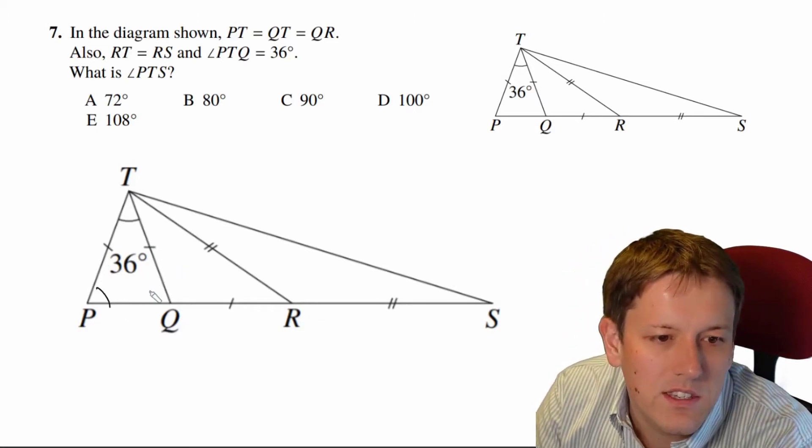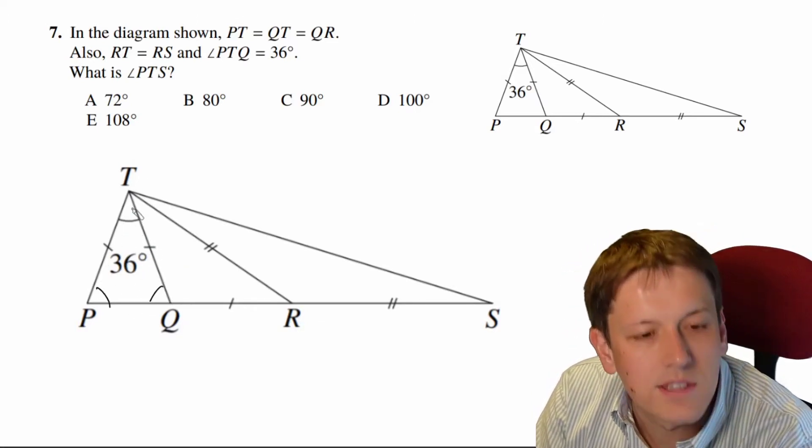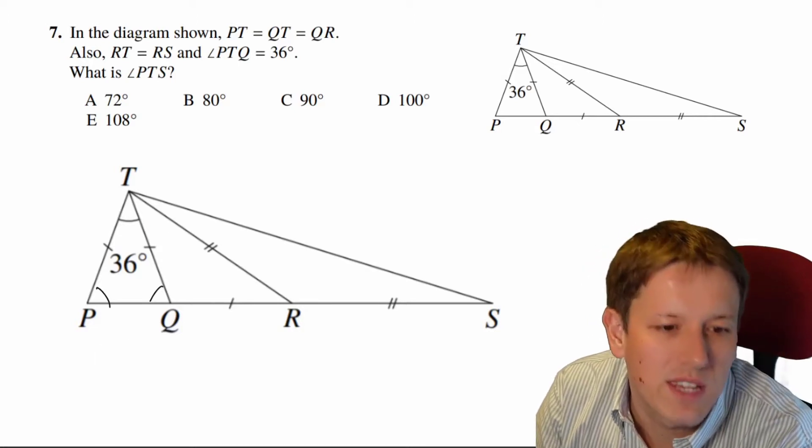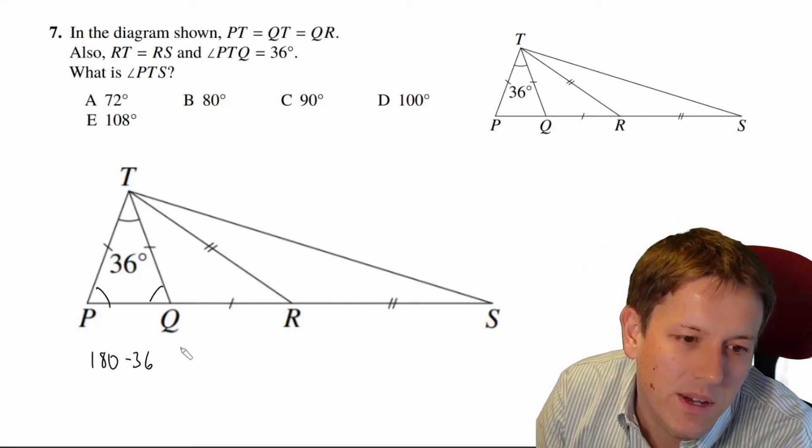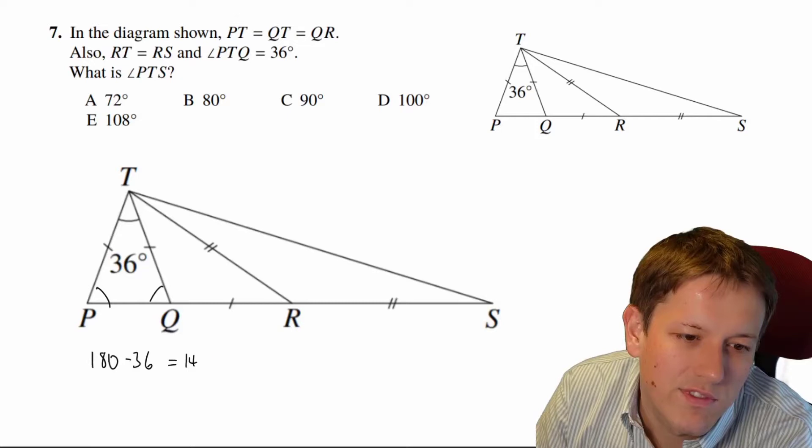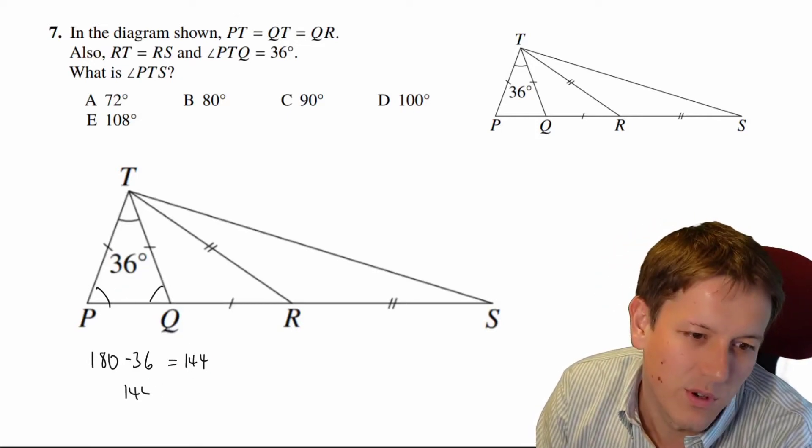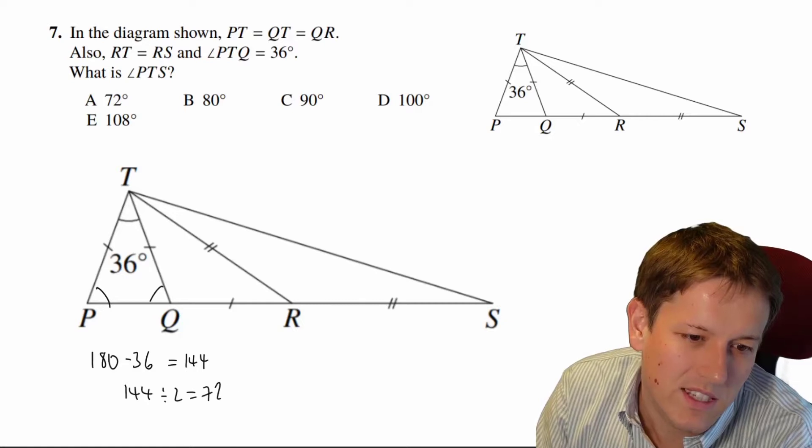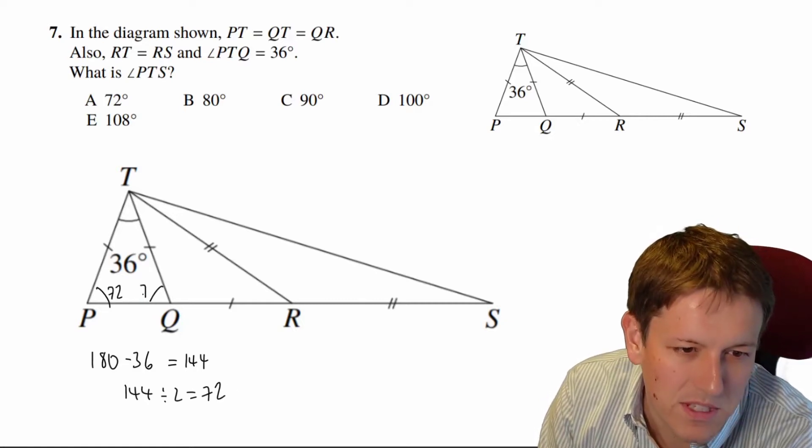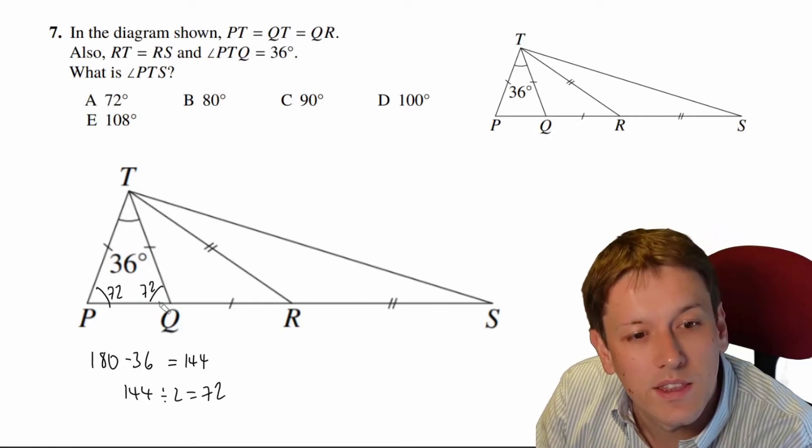So that means that these two angles at the bottom are equal, but the angles in the triangle add up to 180. So if I do 180 minus 36, that's 144, that's the total of these two angles. Divide 144 by 2 and we get 72, so this must be 72 and this is 72.